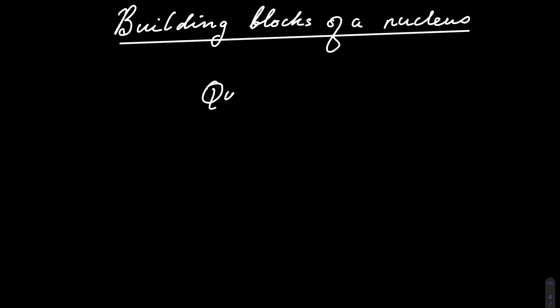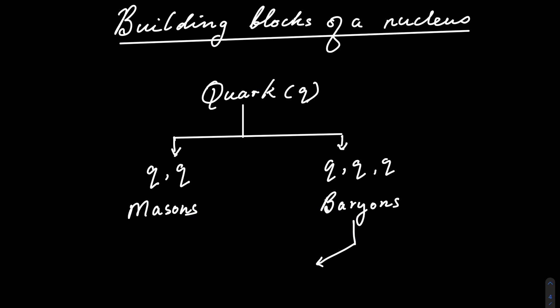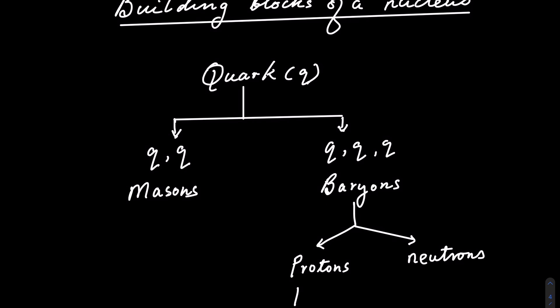The smallest particle known today is called a quark. Quarks always exist in pairs or in triplets. Particles that are made of two quarks are called mesons, whereas those that are made of three quarks are called baryons. Examples of baryons are the protons and the neutrons. Protons are made of two up quarks and one down quark, whereas neutrons are made of two down quarks and one up quark.